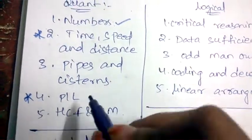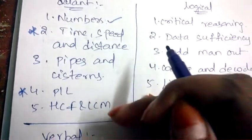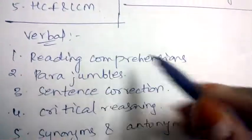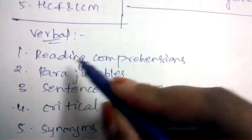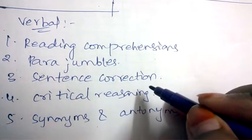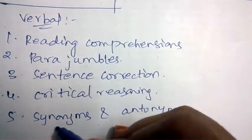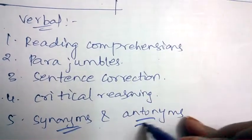Profit and loss is most important topic, but you need to study all these five topics. Coming to verbal, they'll be asking questions on reading comprehension, para jumbles, sentence correction, and critical reasoning along with synonyms and antonyms.